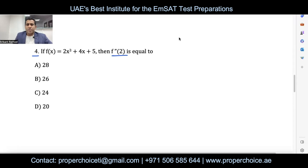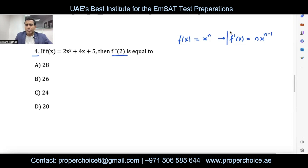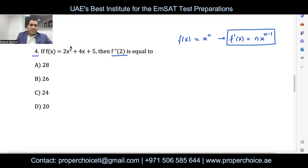We apply the power rule: if f(x) = xⁿ, then f'(x) = n·x^(n−1). If there is a coefficient in front, multiply the power by that coefficient and reduce the power by one. Applying this to 2x³: bring the power 3 in front, multiply: 3 × 2 = 6, reduce power by 1 → 6x². The first derivative of 4x is just 4, and the derivative of the constant 5 is 0.